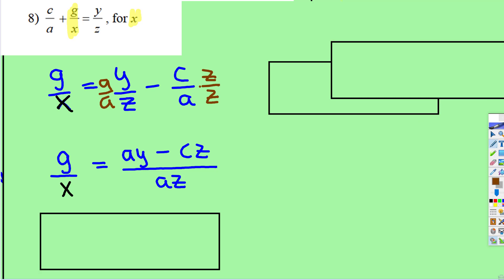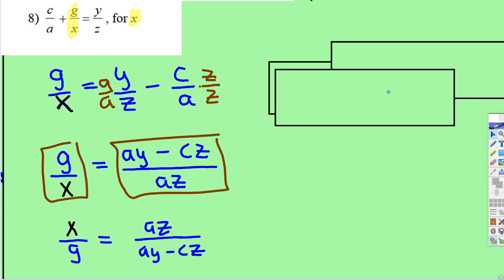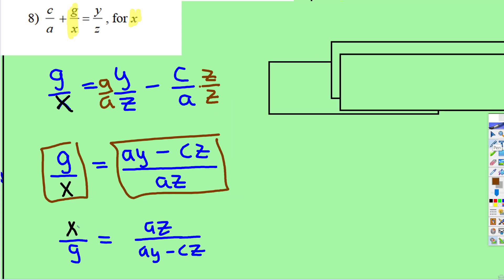So it'll look just like this, and then now that we have a fraction equal to a fraction, we can flip both sides. So that's what I did here. x over g is equal to az divided by ay subtract cz.